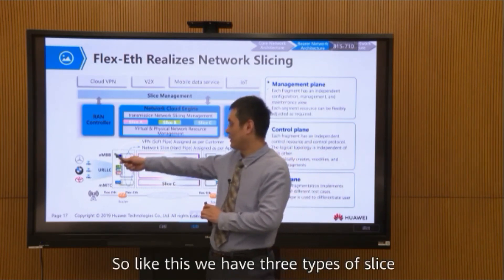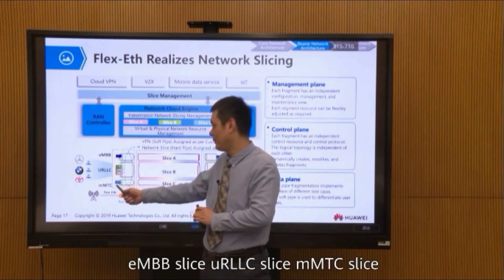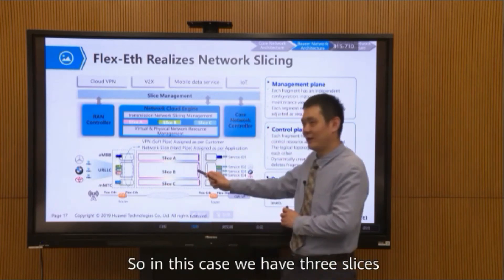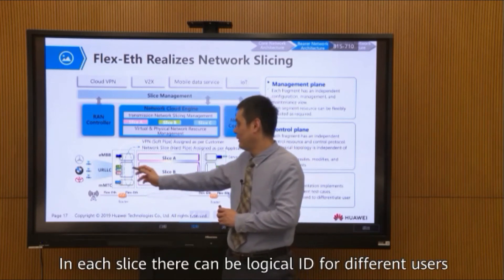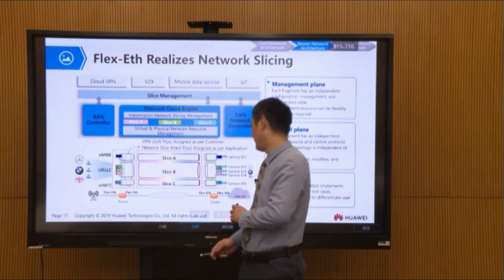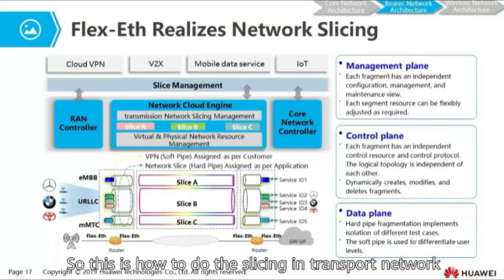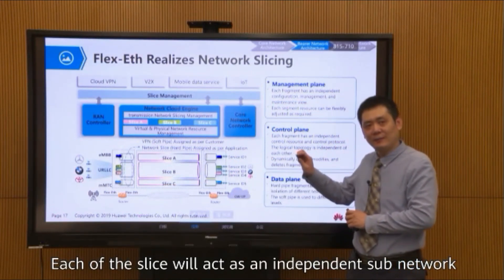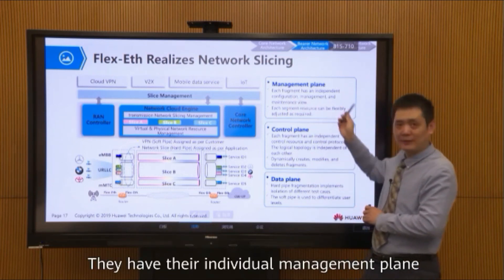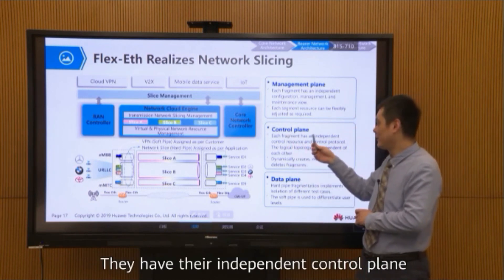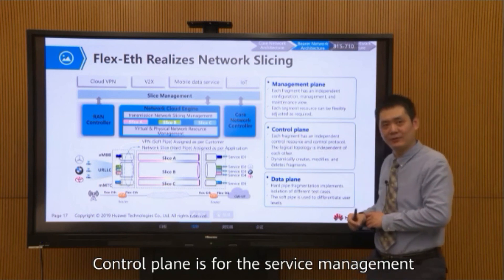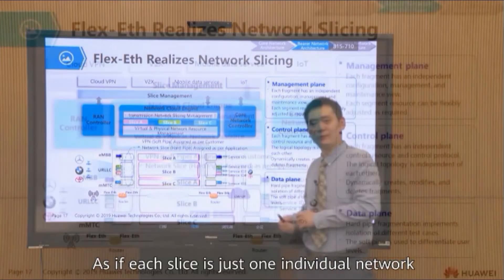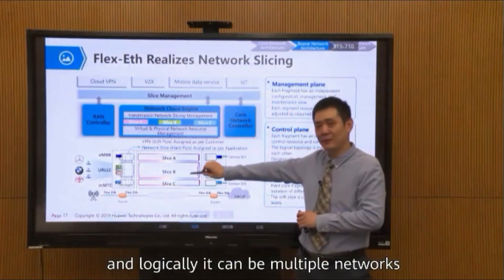We have three types of slices: eMBB slice, URLLC slice, and mMTC slice, using different time slots for hard slicing. In each slice, there can be logical service IDs for different users. Each slice will act as an independent sub-network. They have their individual management plane for operation and maintenance, their independent control plane for service management, and also a data plane — the user plane — for data transfer. It is one physical network, but logically it can be multiple networks.